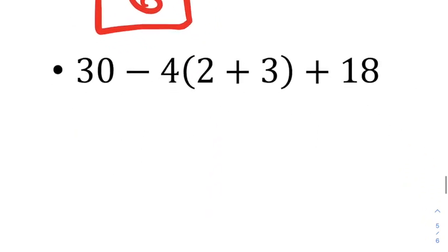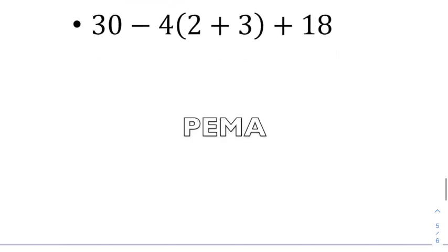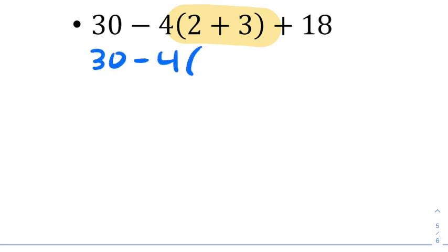All right, on to the next problem. And the first thing we're going to do is we're going to think about PEMA and look for parentheses. In this problem, we have some parentheses, so we're going to start off by simplifying those. You're going to see me rewrite the problem, but instead of 2 plus 3 in parentheses, I've now changed it to a 5.